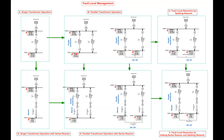In the second case with an identical parallel transformer, the impedance is effectively halved, so the fault current increases to 23 kiloamps. This is because the transformer impedance is halved in parallel. However, when we split the network, the fault current is reduced by half — from 23 down to 12 kiloamps. So the fault level is now reduced from 23 to 12, and technically this becomes identical to the single transformer case.